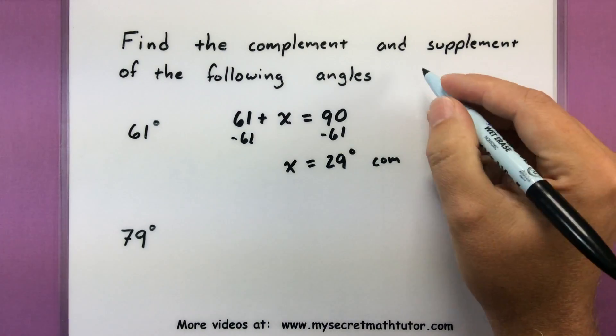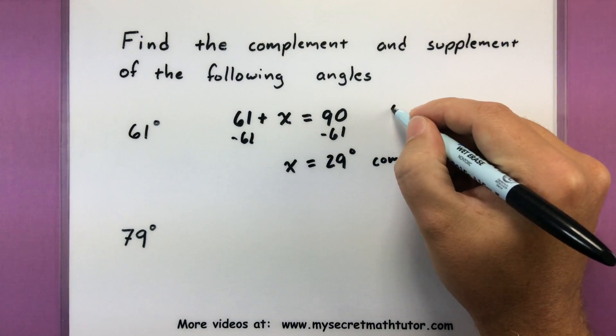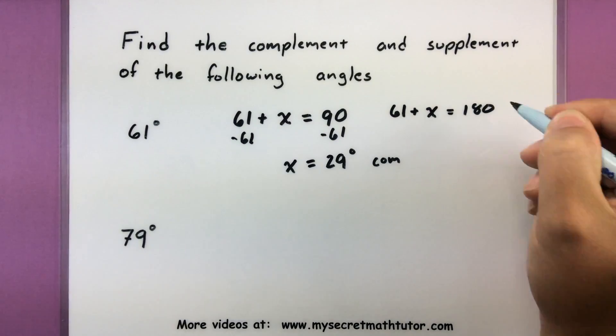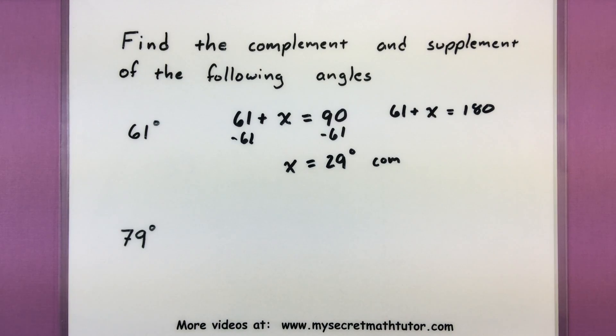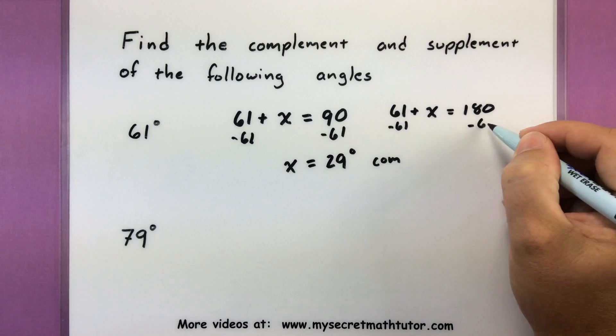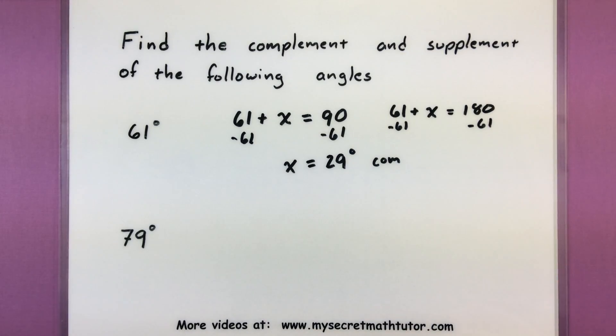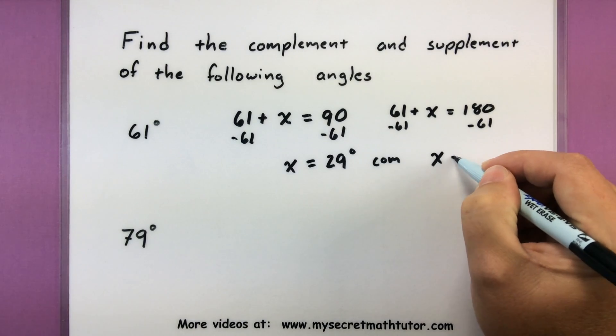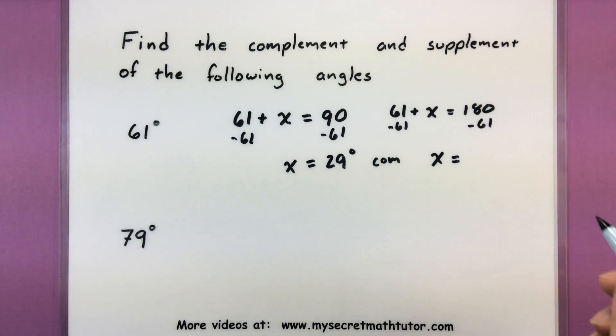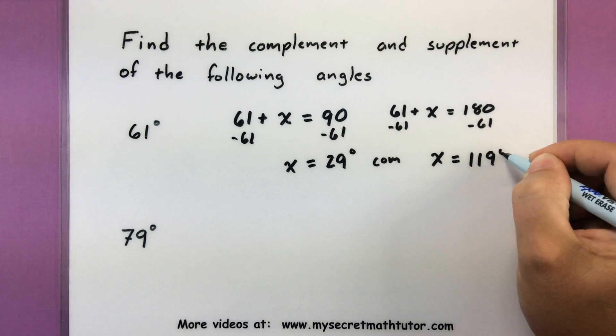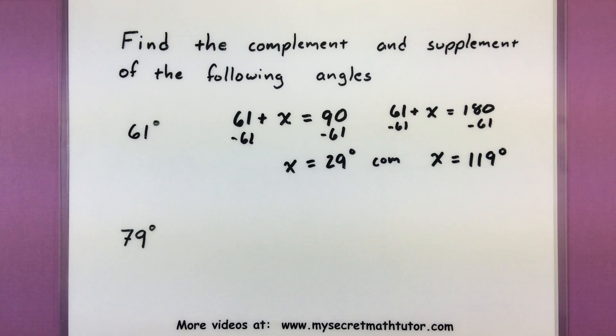Now in that same manner if we're looking for the supplement you'd think of 61 degrees plus some mystery angle equals 180. Same idea now we just set it equal to 180 instead of the 90. So like before you could subtract 61 from both sides. See what's left over. In this case I get 119 degrees. Nice and simple.